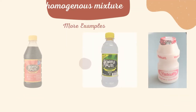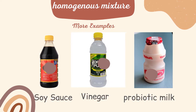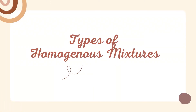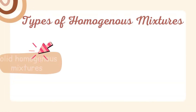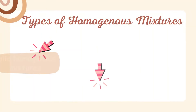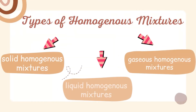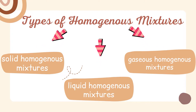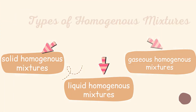These are other examples: soy sauce, vinegar, and probiotic milk. What are the types of homogeneous mixtures? We have solid homogeneous mixtures, liquid homogeneous mixtures, and gaseous homogeneous mixtures. So these are the three types of homogeneous mixtures.